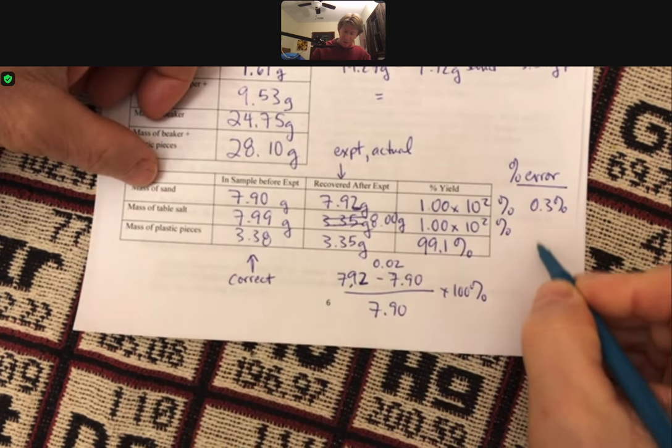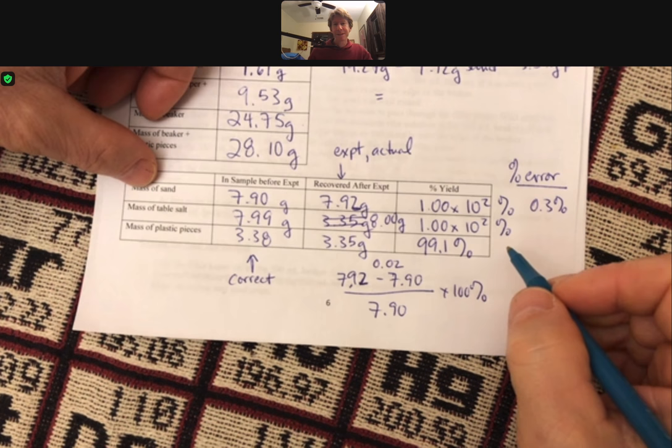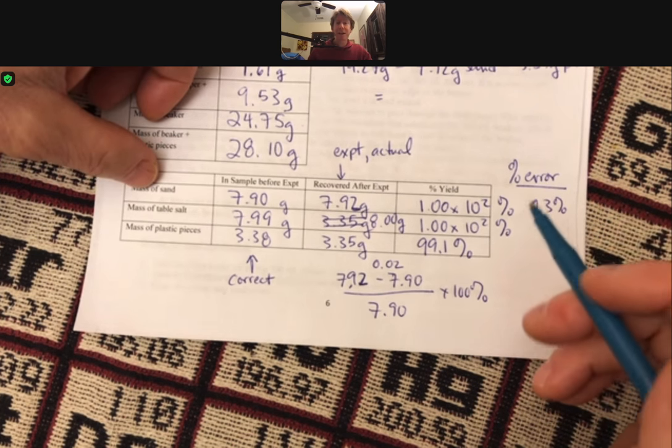I'll allow you to do the other two percent errors. Make sure you show me at least one of your calculations. And the percent errors. And so whatever you get is what you get. Make sure you do the calculations correctly.